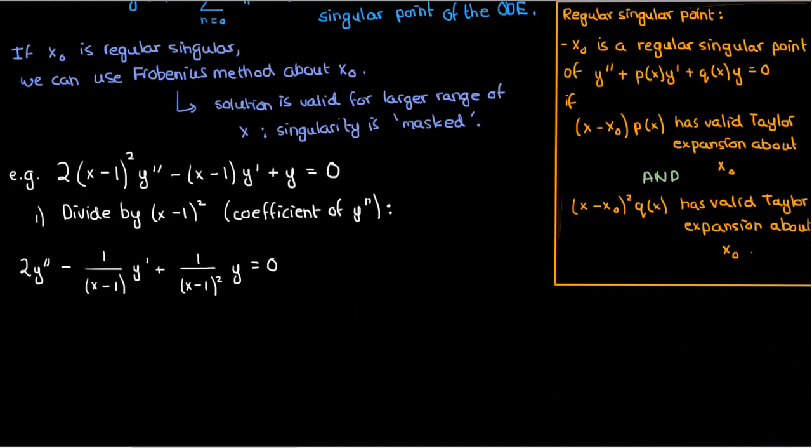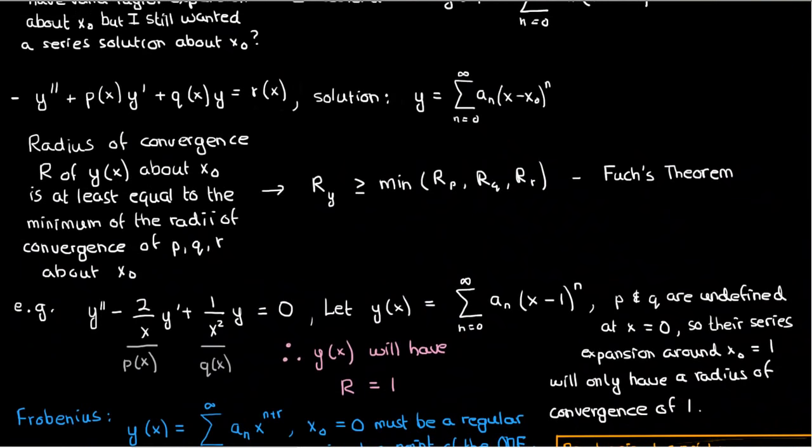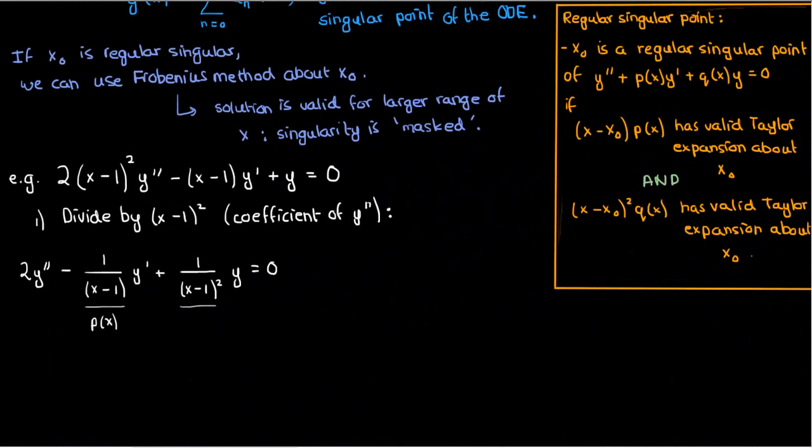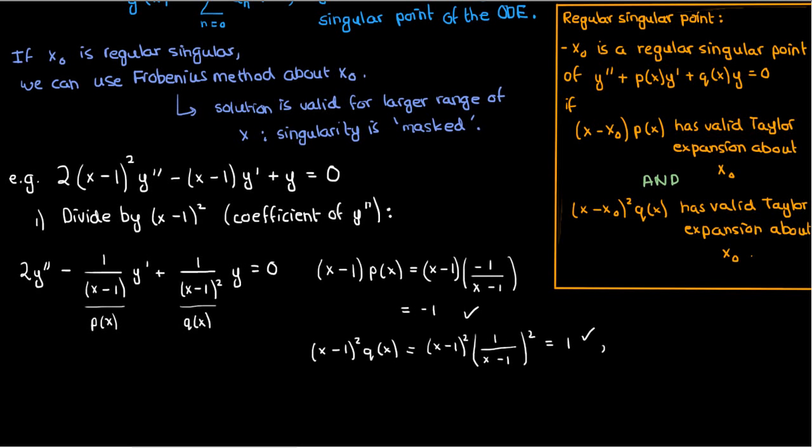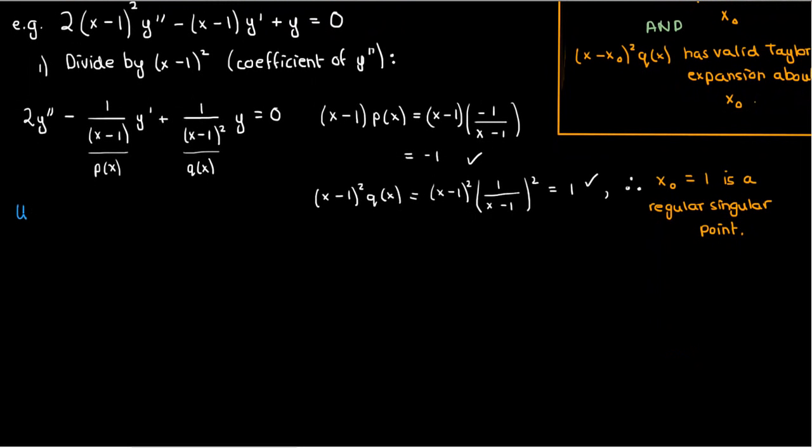Now let's check for regular singular points. Clearly we can see that because of the (x-1) term in the denominators, x = 1 would make these expressions undefined, so it's definitely a singular point, but is it regular singular? Well checking that is pretty easy. We compare it to the more general ODE, then we can see that p(x) is -1/(x-1), while q(x) is 1/(x-1)². And if we multiply p(x) by (x-1), we clearly end up with -1. If we multiply q(x) by (x-1)², we'll end up with 1. And both of these are defined and thus have valid Taylor series expansions at x = 1. They're just constants. So x = 1 is indeed a regular singular point, which means we can definitely use Frobenius' method with a power series expanded around x = 1.